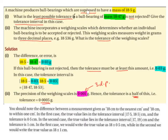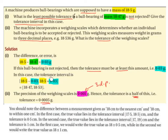A machine produces ball bearings which are supposed to have a mass of 18.5 grams. Part 1: What is the least possible tolerance if a ball bearing of mass 18.47 grams is not rejected? Give the tolerance interval. The difference is 18.5 minus 18.47, which is 0.03 grams. If this ball bearing is not rejected, the tolerance must be at least 0.03 grams. The tolerance interval is therefore 18.47 to 18.53.